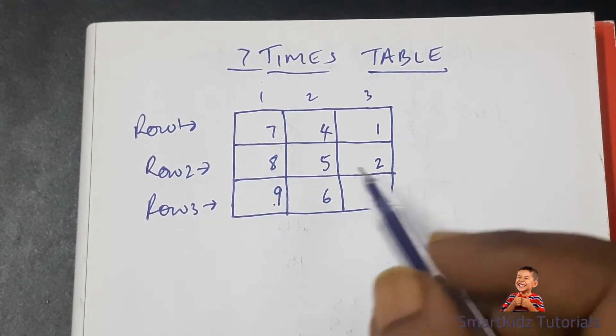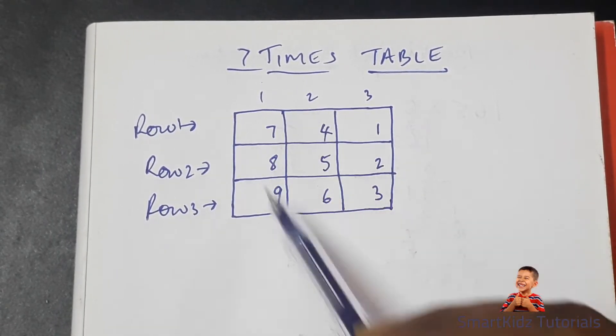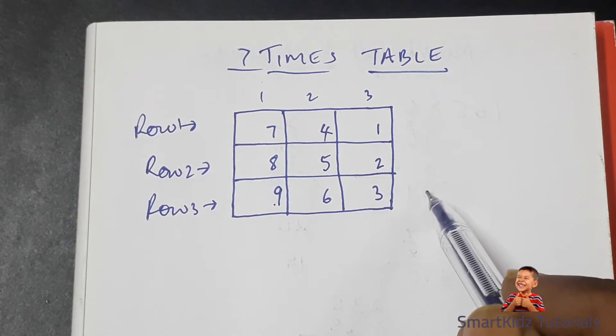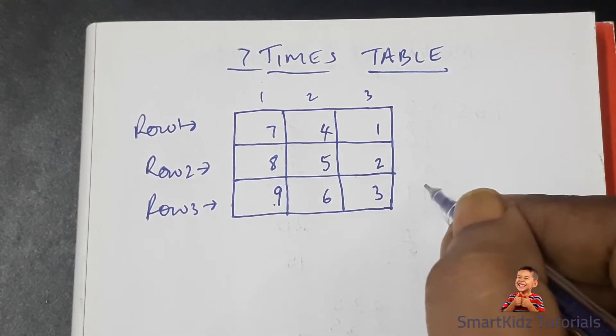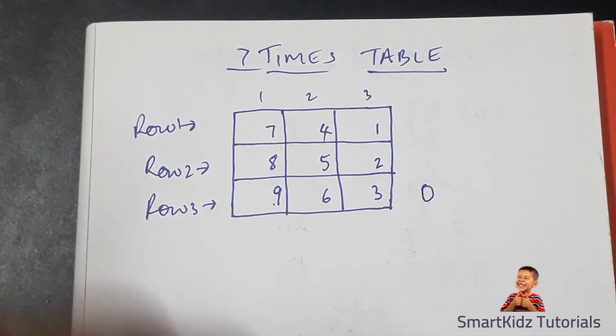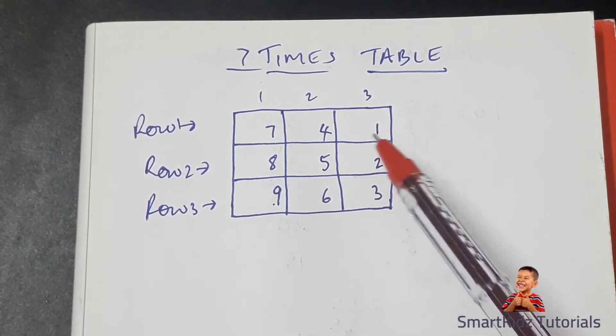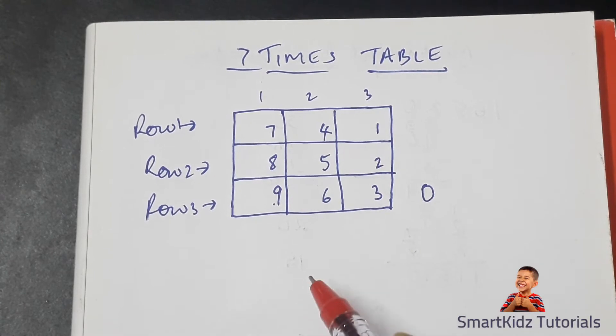There's a zero that we put. In the three times table, the zero was put at the bottom left. For the seven times table, we'll put the zero at the top left in the units place. Now, to fill up the cells of the tens place, we begin with row one.